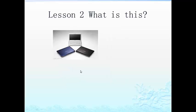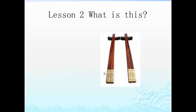电脑. Repeat after me: 电脑. 电 means electricity, 脑 means brain. 电脑 — electronic brain — means computer.